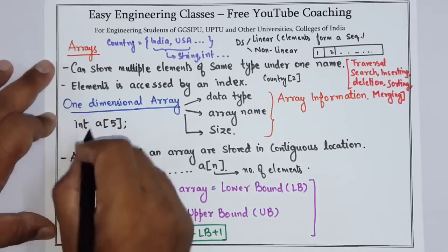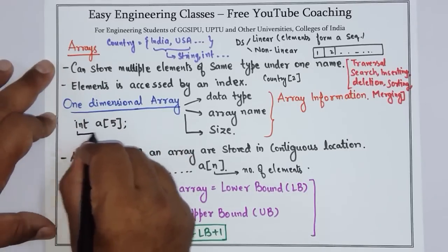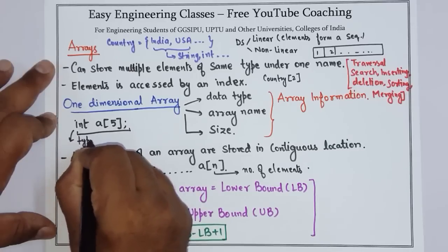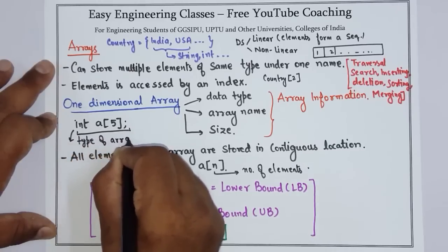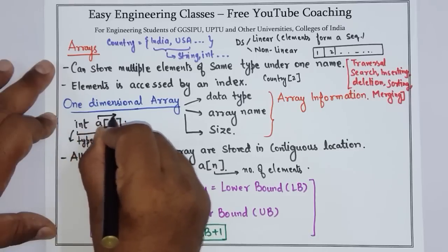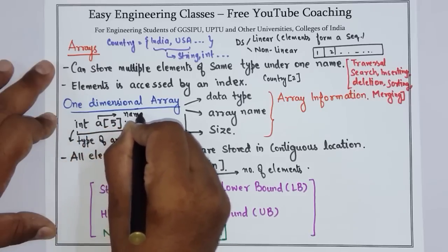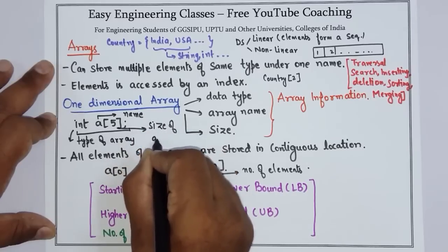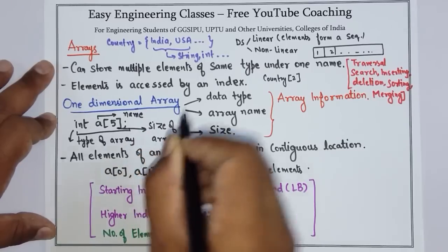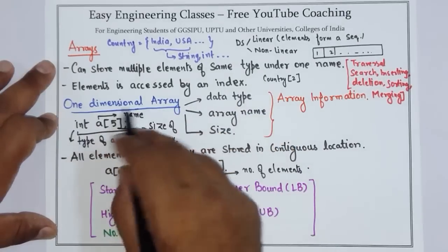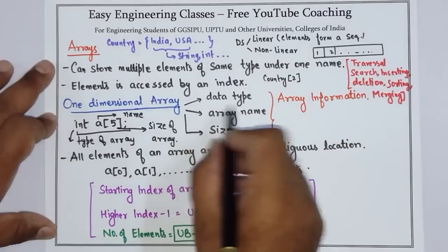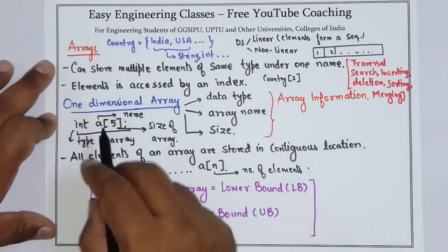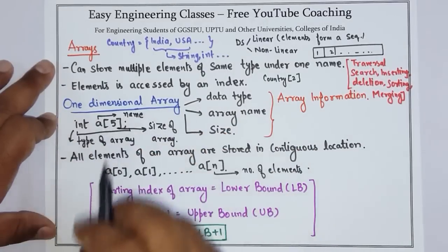To declare a one-dimensional array you can use this syntax. This is the type of the array; A is the name of the array; and five is the size of the array. A one-dimensional array can be represented using three pieces of information: data type (int in this case), array name (a in this case), and size (five in this case).